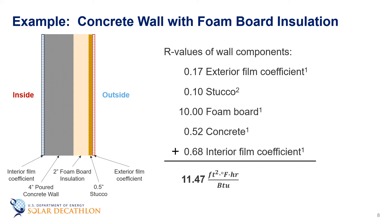Now, there are a couple of interesting observations here. One is that the resistance of the concrete is very, very small — and even though it's pretty thick, that concrete is highly conductive. The second observation is that the film coefficients together have a higher resistance than the concrete. So the foam insulation is dominating the insulation value of this wall. We can use this technique of adding up R-values for any wall made up of consistent layers where the foam is continuous across the entire wall and the concrete and stucco are continuous and homogeneous.